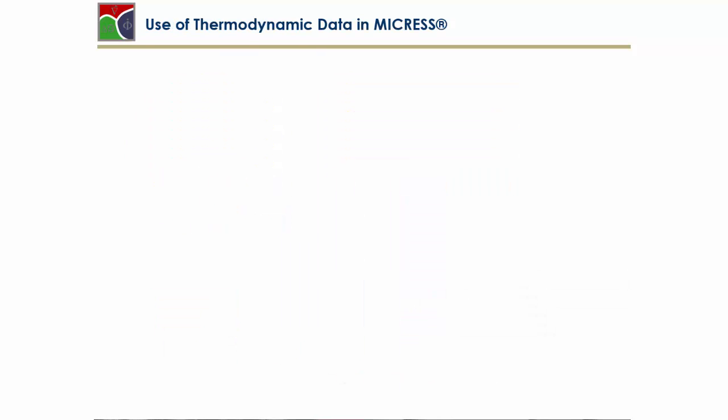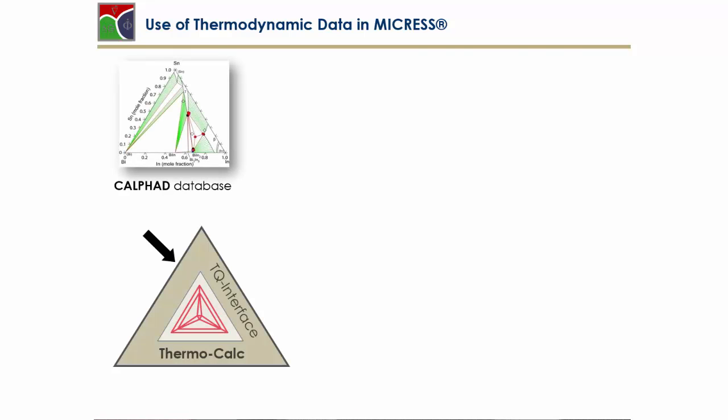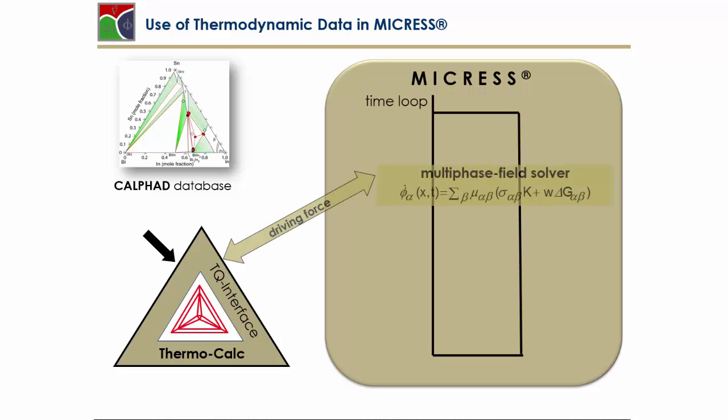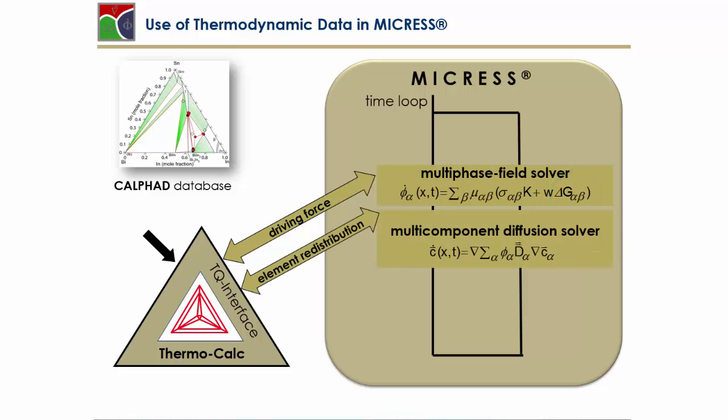Let's go a little bit more into details of the use of thermodynamic data in MICRES. The first thing is we can calculate the local deviations from equilibrium, the differences in the Gibbs energies, which makes the delta G. Next, we can calculate the redistribution of the elements between the different phases which gives us the segregation, and we can use diffusion data from the mobility databases which gives us the full diffusion matrix in the system.